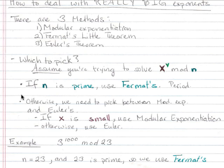Otherwise we still have to pick between our other two options, modular exponentiation and Euler's. If x is small, if this number right here is small, we want to use modular exponentiation. Otherwise we're going to use Euler's.